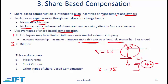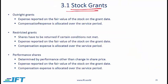The three broad categories of share-based compensation are shown here. The first category is stock grants, which has three sub-categories. The most basic is an outright grant where employees get shares. This expense needs to be reported at fair value — the fair value of the stock on the grant date. If the service period is four years, then the expense needs to be allocated over those four years.